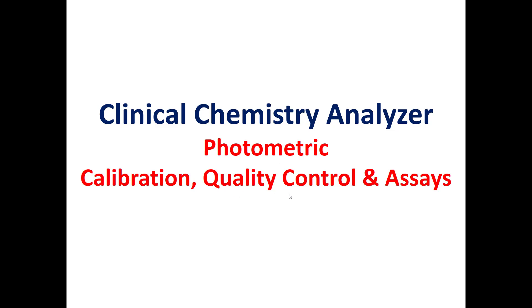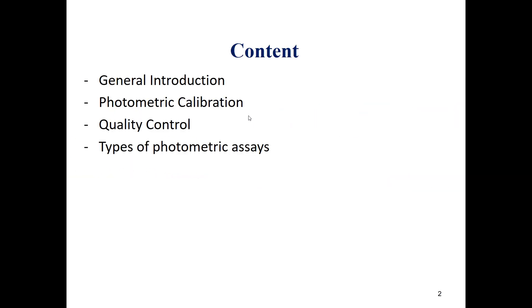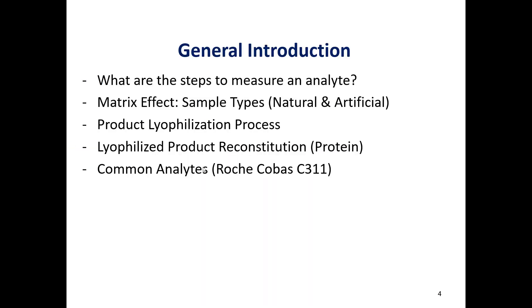Photometric calibration, quality control, and assays for a clinical chemistry analyzer will be our topic. This topic will be separated into four parts: a general introduction, photometric calibration, quality control, and finally the types of photometric assays. So now we'll start with a general introduction.